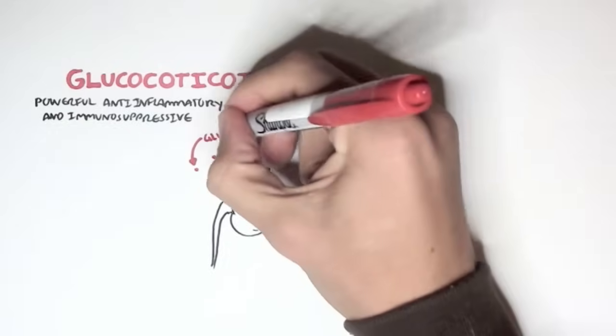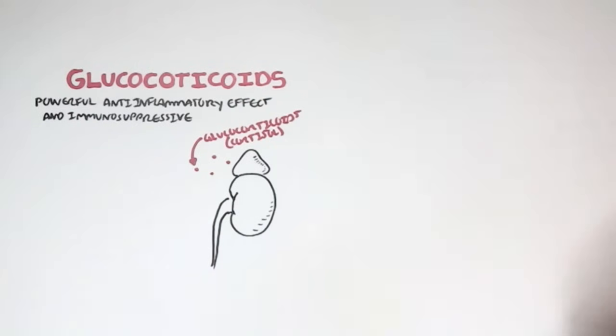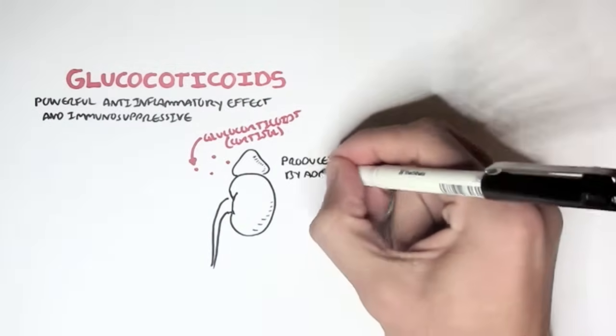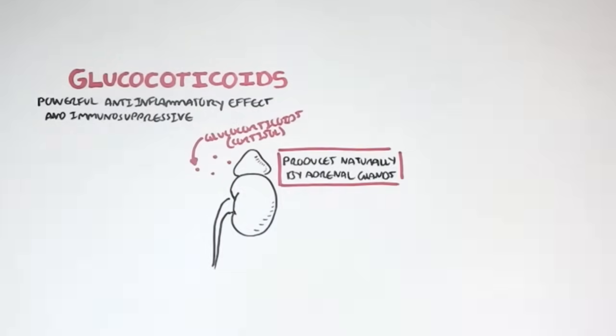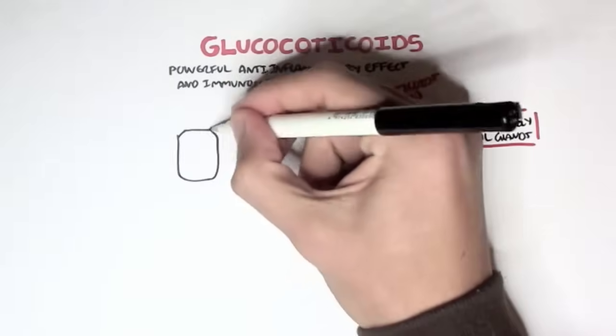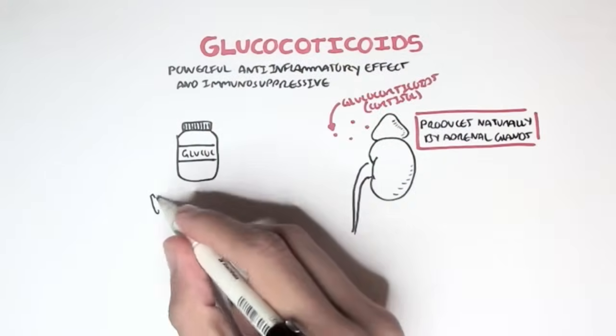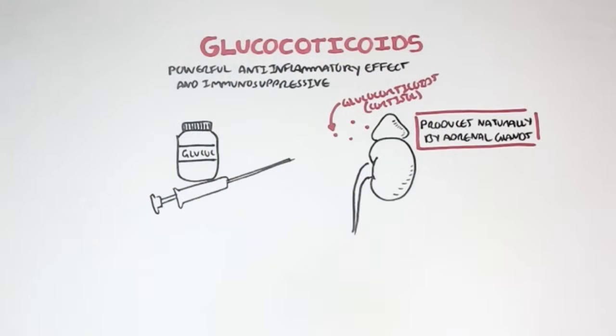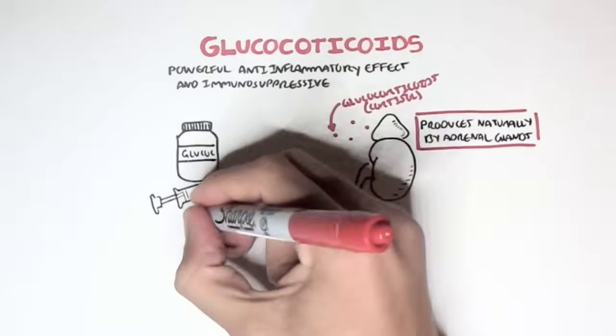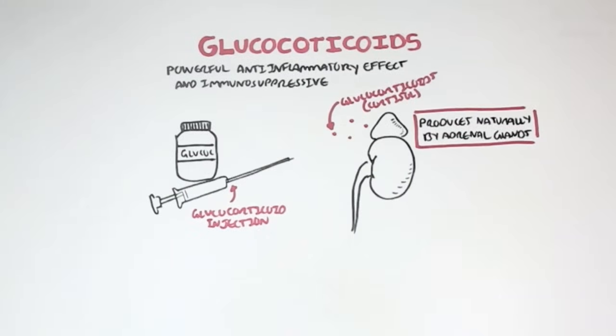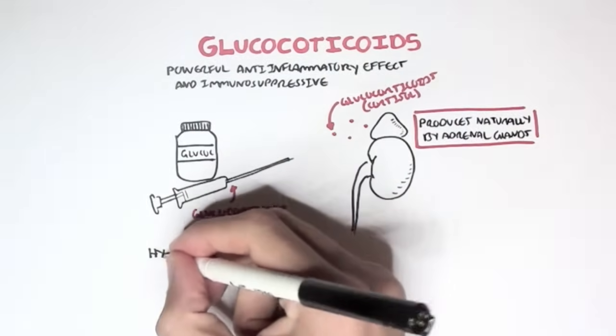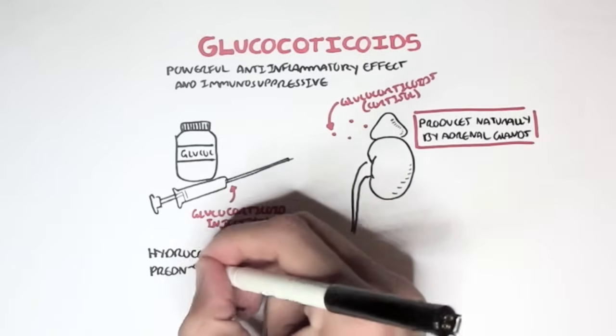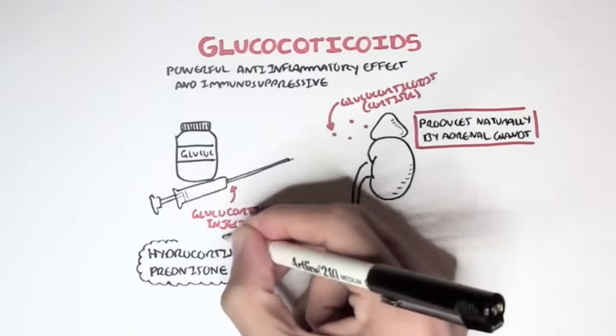Now, glucocorticoids are actually produced naturally by the adrenal glands in our body. This hormone is known as cortisol in this case. However, glucocorticoids can also be synthetically made and injected or taken orally.